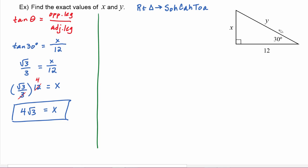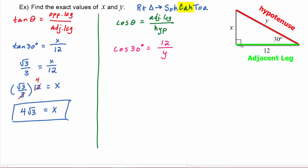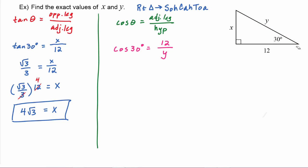Now to find y, we go back to our picture. Here's the 30 degrees — we know that 12 is the adjacent leg and y is the hypotenuse. So if we're using adjacent and hypotenuse, we're going to use the cosine function. Cosine of theta is equal to the adjacent leg divided by the hypotenuse. We get that cosine of 30 degrees has to equal 12 divided by y, because 12 is the adjacent leg and y is the hypotenuse.